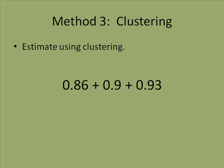Finally, the third method of estimation is called clustering. We use this when we have several numbers. In this case, the problem is 0.86 plus 0.9 plus 0.93.